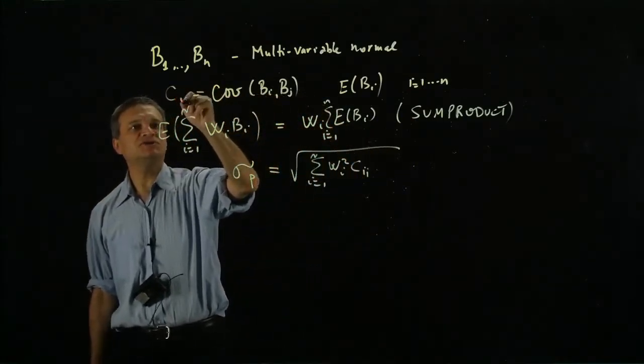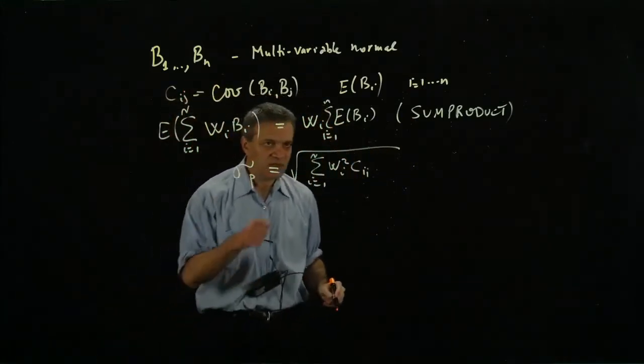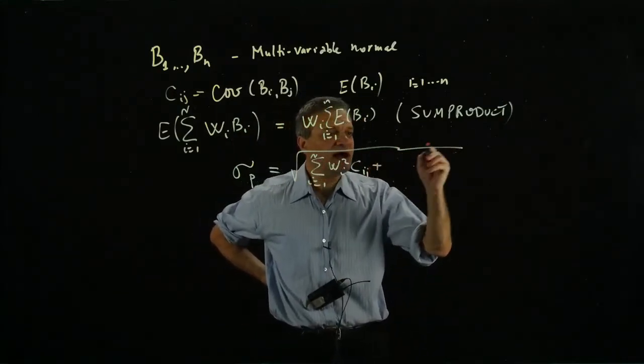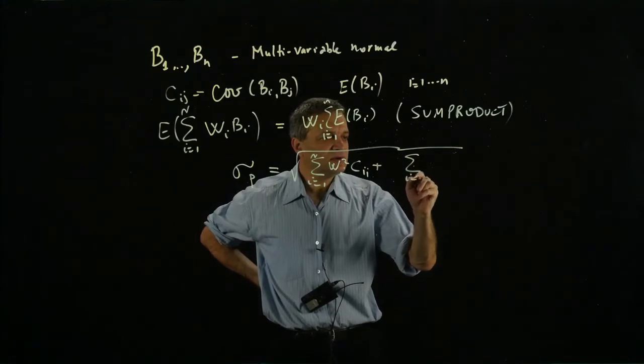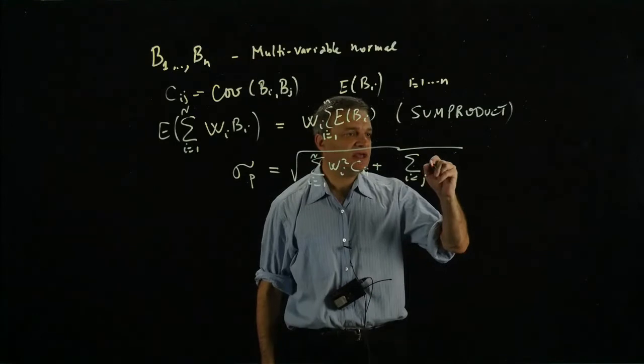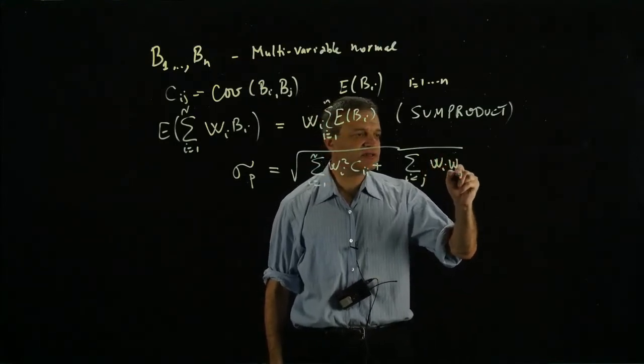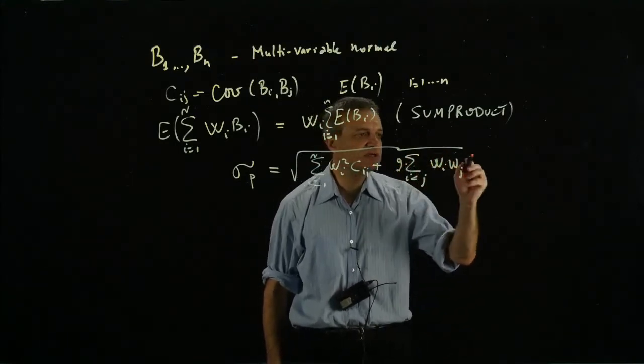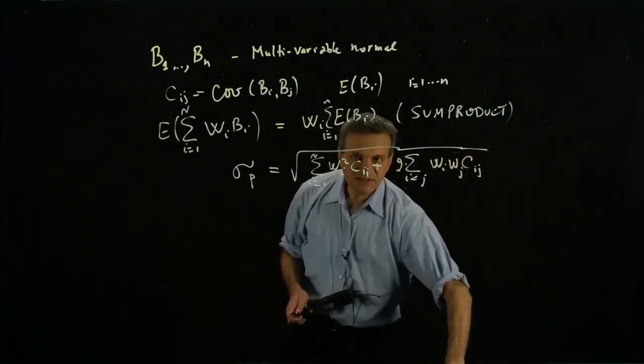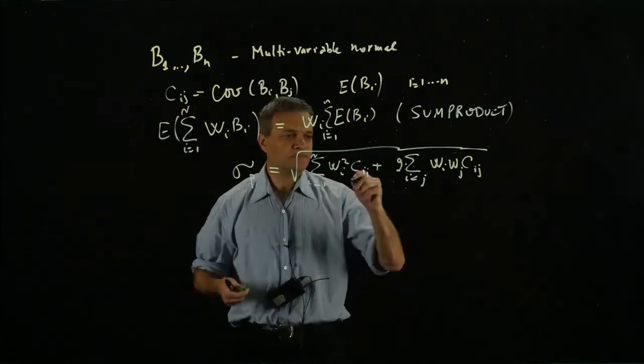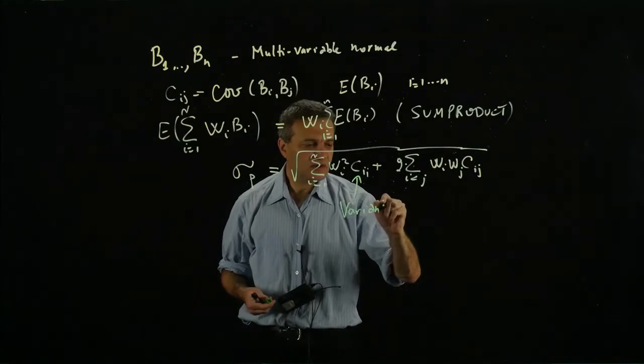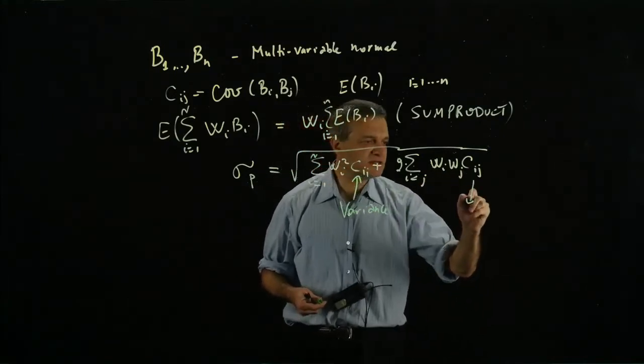Plus the guys which are not on the diagonal—these are the mixed products, and we need to put 2 here: 2 times the sum of wi times wj times cij. This first term is the variance, and the second is the covariance.